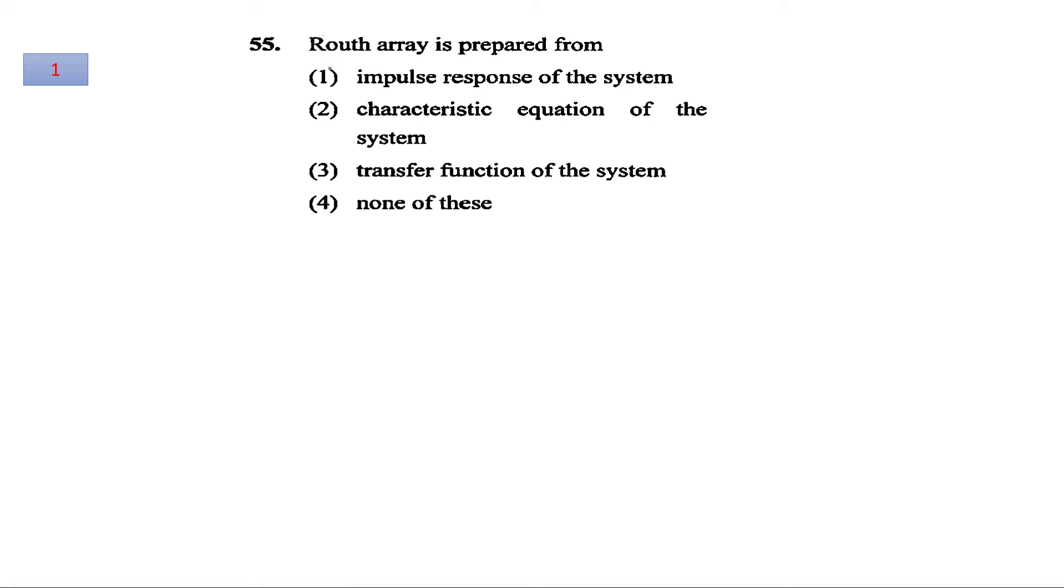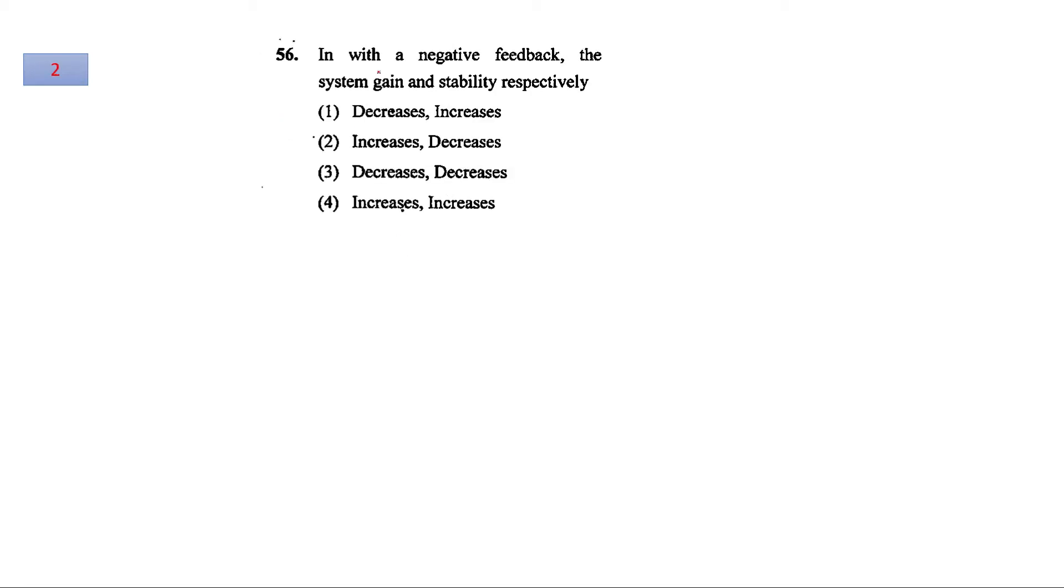In question number 1, it is asked: the Routh array is prepared from what? The Routh array is used for finding the absolute stability of a system and it is obtained from the characteristic equation of the system. So for this question, the answer is option number 2.